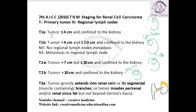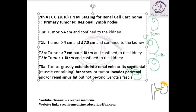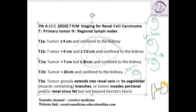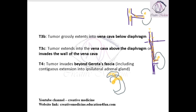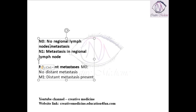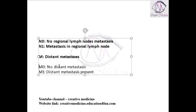That covers the T staging. For N, the nodal staging, we have only two types: N0 and N1. N0 means there is no regional lymph node metastasis. N1 means there is regional lymph node metastasis. For M staging: M0 means there is no distant metastasis, and M1 means distant metastasis is present.